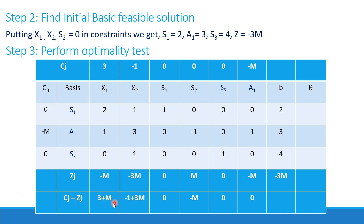For a maximization problem, all Cj - Zj values must be zero or negative for the solution to be optimal. Here we have 3 + M and -1 + 3M, which are both positive for any large value of M. For example, substituting M = 10 gives 13 and 29 respectively. Since positive values exist, the current feasible solution is not optimal. We must select the most positive Cj - Zj to identify the entering variable.